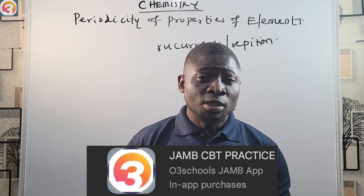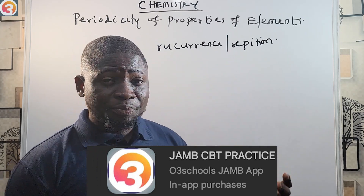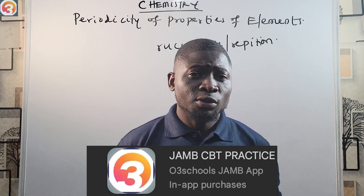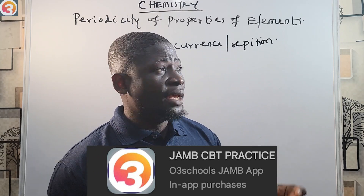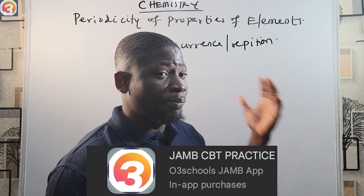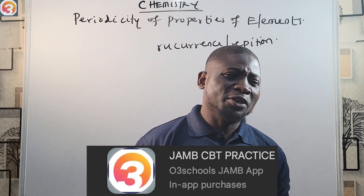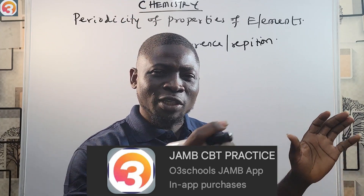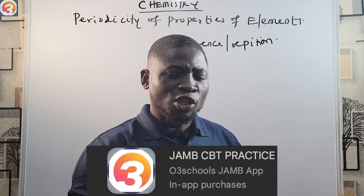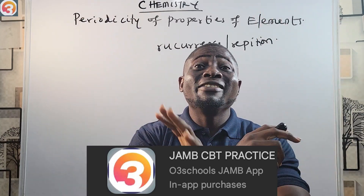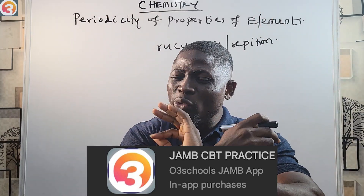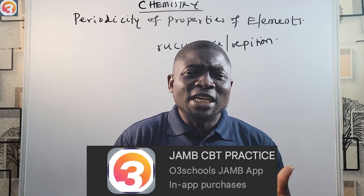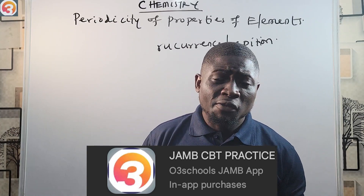There are many other features like the question search feature. For example, go to the app, click on question search, go to chemistry, type in 'periodic table' and all the questions that have come on that topic will show on your phone. After finishing a topic you can review all the questions that have appeared in JAMB.